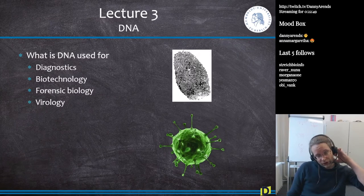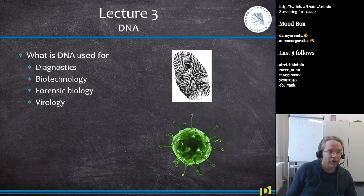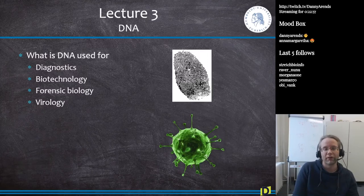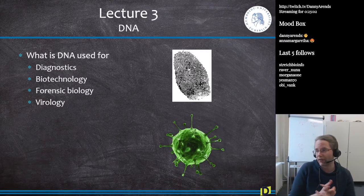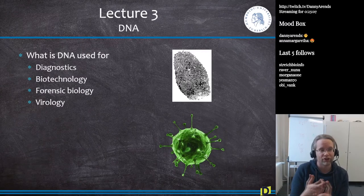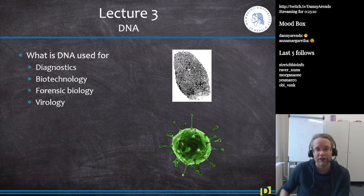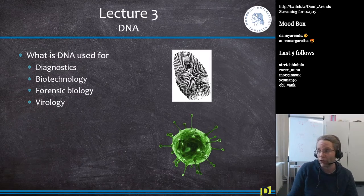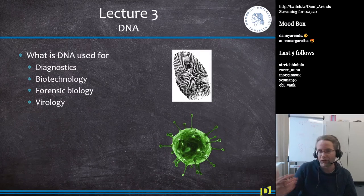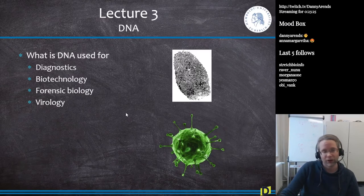In Lecture 3 we talked about DNA. DNA is used for diagnostics, biotechnology, and forensic biology and virology — catching criminals, finding the BRCA gene for breast cancer risk, making algae produce biofuels by optimizing their DNA.